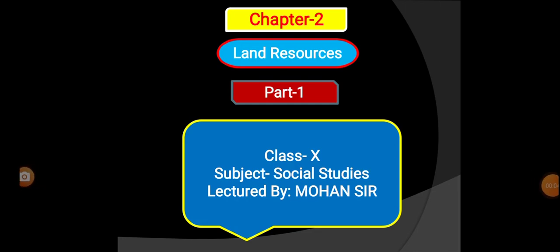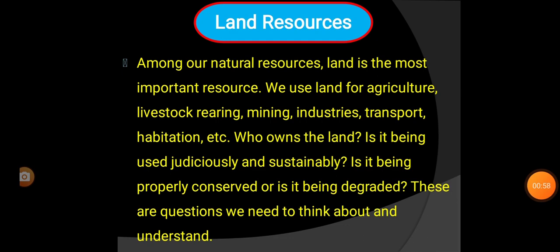Hello students, welcome to Mohansar's classes. In this class we will discuss Chapter 2 of your social study textbook. The name of the chapter is Land Resources. This is the second chapter of the geography section. In this video clip we will discuss Part 1 of Land Resources — the different uses of land in India. Let us begin the lesson.